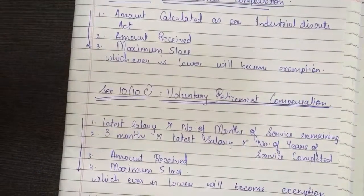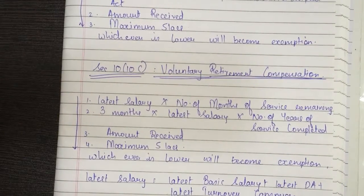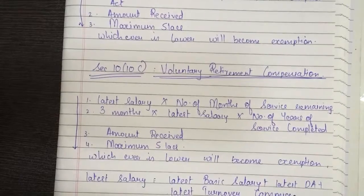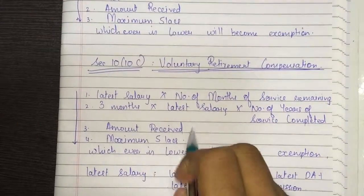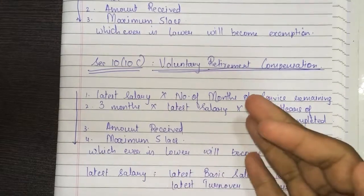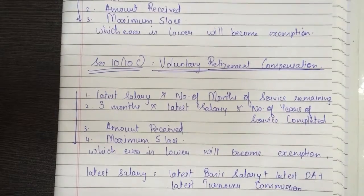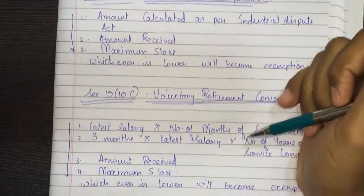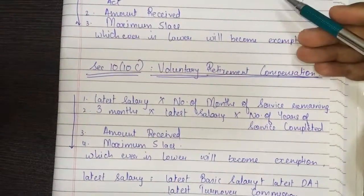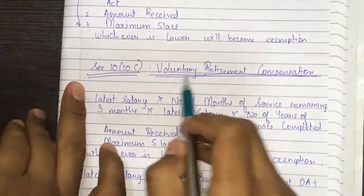This voluntary retirement compensation formula is rarely asked in the exam, but it is better to be prepared for the worst. Since the last many years I have not seen this asked, but there is a possibility that a four-mark theory question may come asking about the exemption under Section 10(10C) directly. So let's complete this topic and then revise both Section 10(10B) and 10(10C).